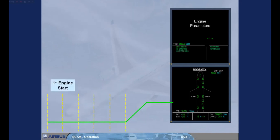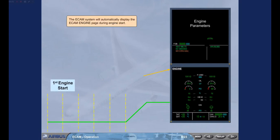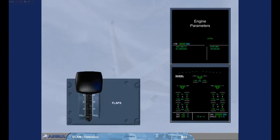The ECAM system will automatically display the ECAM engine page during engine start. The ECAM wheel page is automatically called so that during taxi, the brake temperatures can be monitored. Part of the after-start checks involves the arming of the ground spoilers and flaps setting. We will arm the spoilers and select the flaps for you.